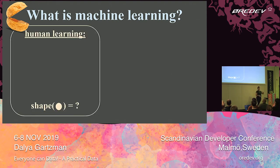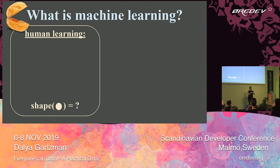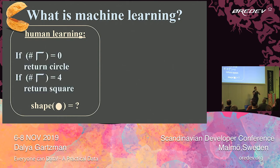Before we talk about machine learning, what is human learning? In classic programming, I have a task that I want to perform — for example, I want to know which shape I'm seeing. As the designer of the program, I need, as a human, to learn how to perform this task and then communicate to the machine how it needs to perform this task. For example, maybe I understood that you need to count corners. If you see zero corners, it's a circle. If you see four corners, it's a square.